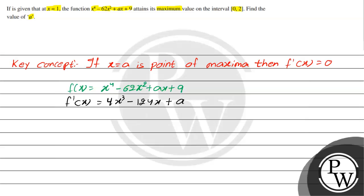At x=1, the function attains its maximum value on the interval [0,2]. According to our concept, this means f'(1) = 0.